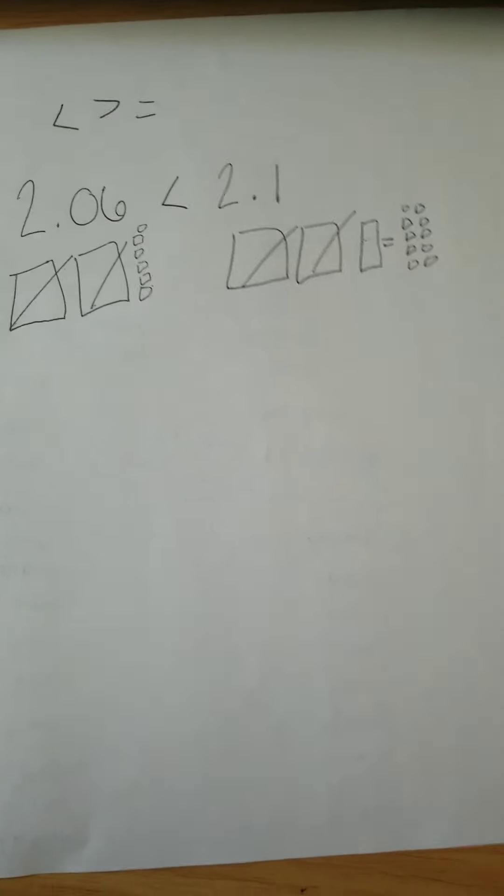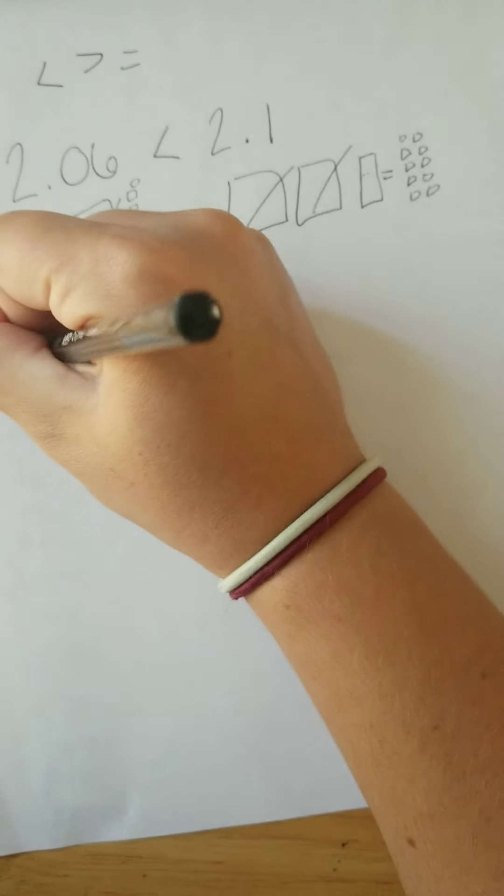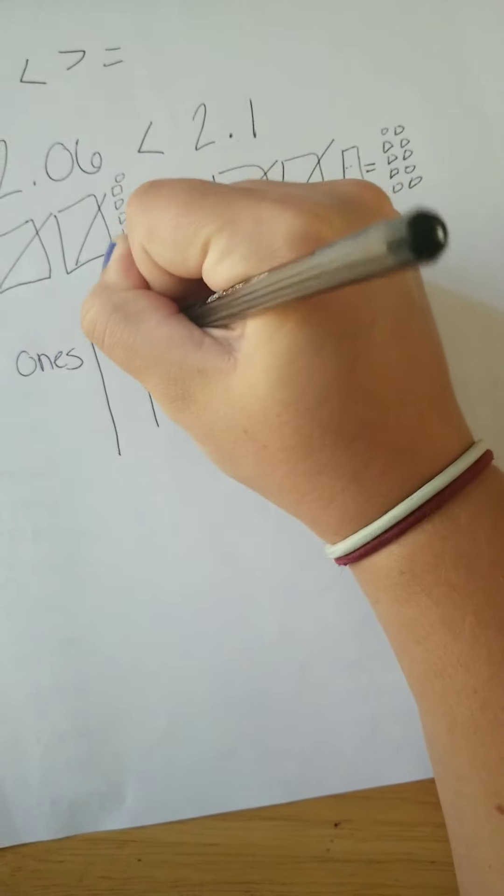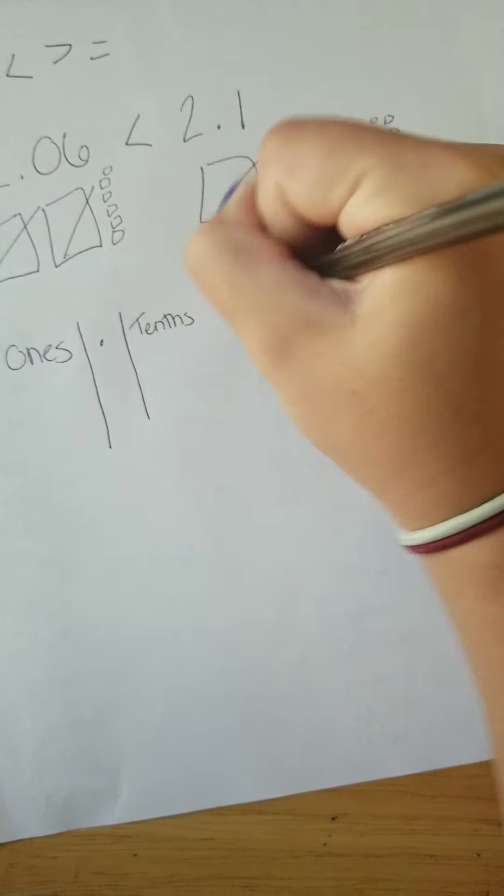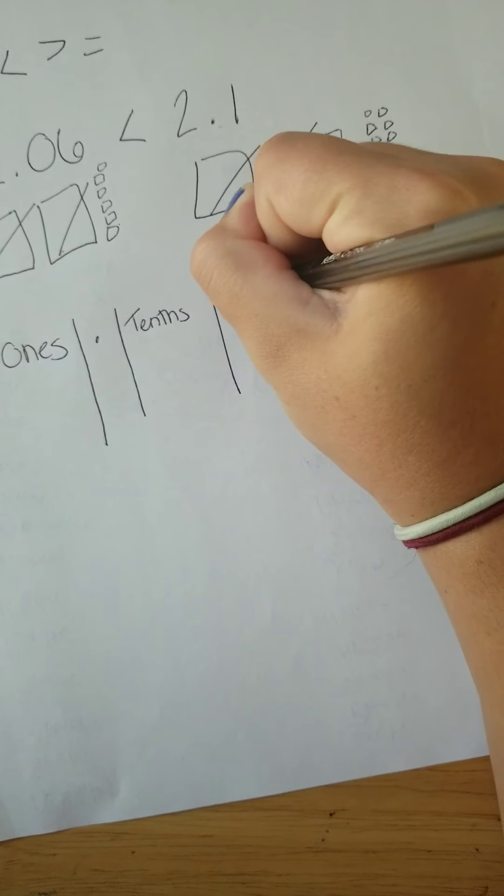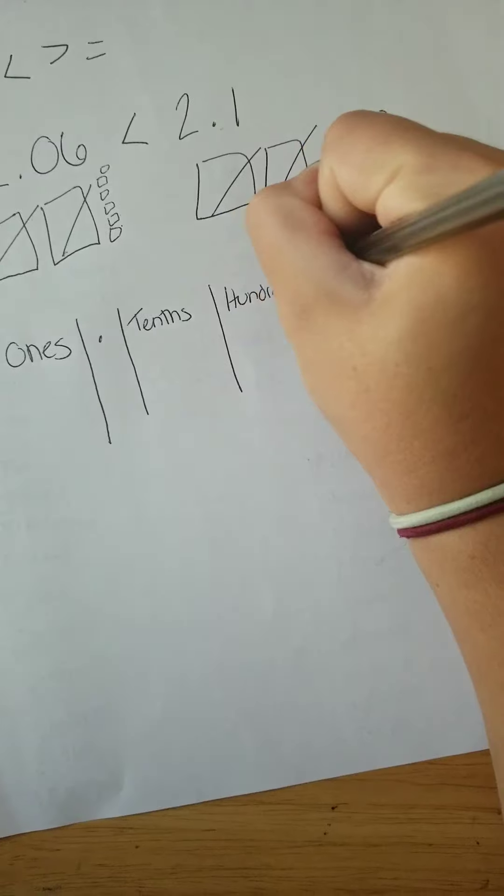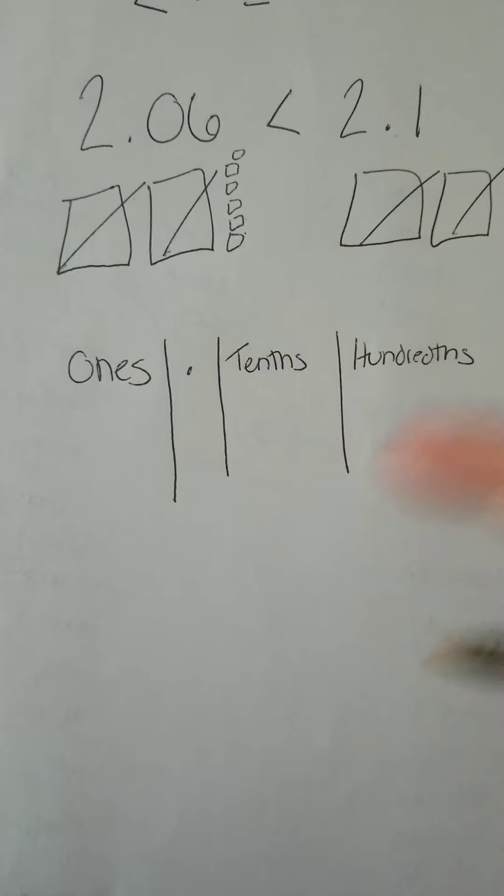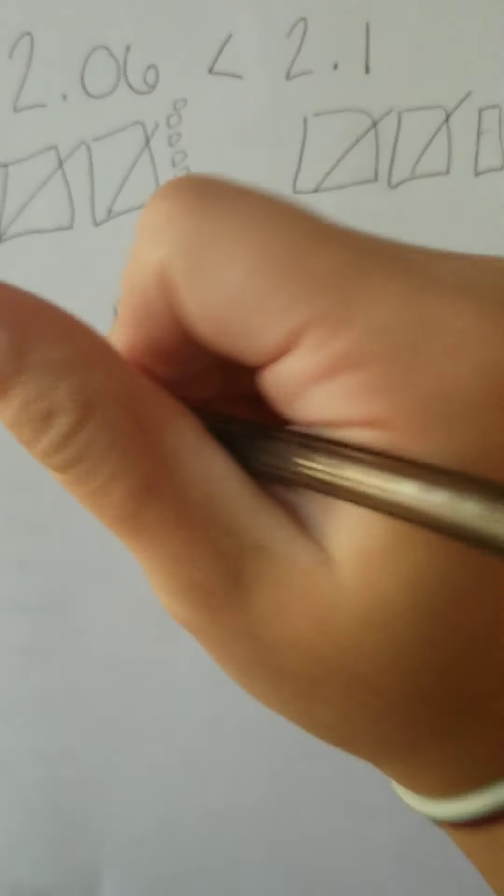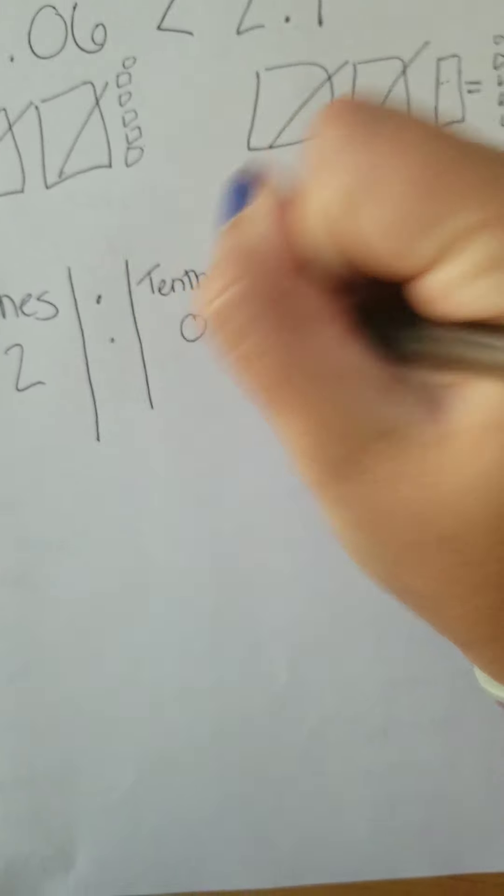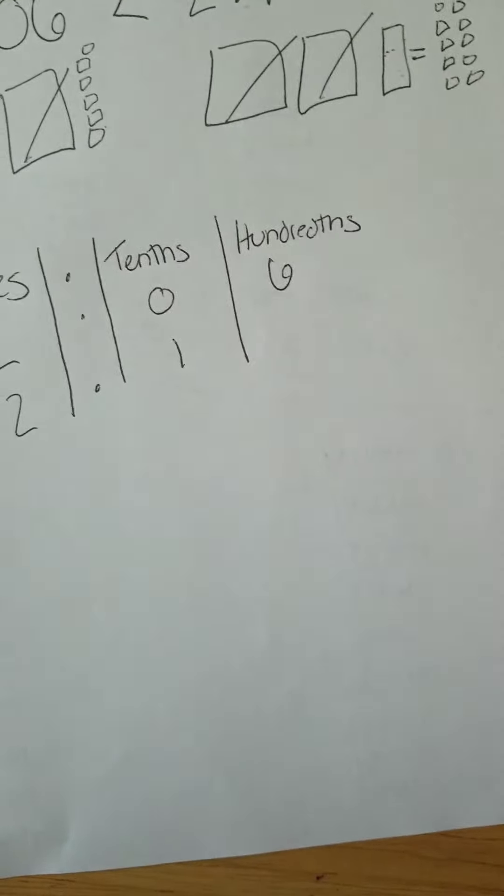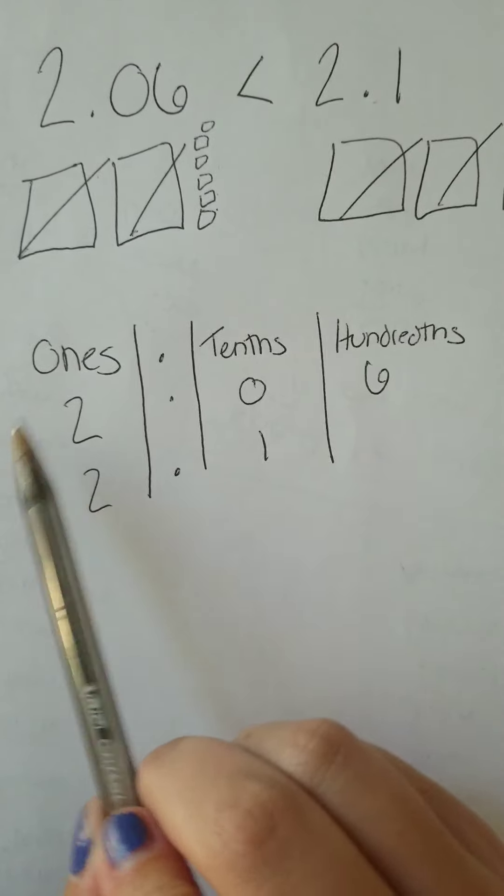Another way would be to use a four-column note. I've got my ones place, I've got my decimal, I've got my tenths, and I've got my hundredths. And every time that you see a decimal, you can plug that decimal into this four-column note. So I could do two and six hundredths, two and one-tenth.